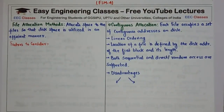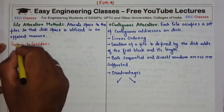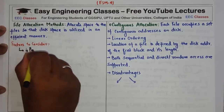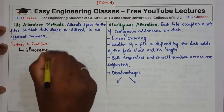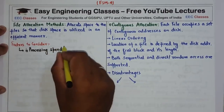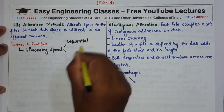Hello everyone. In this video, the topic is file allocation methods, and this is the fourth lecture on file system management of operating systems. File allocation method means allocating space to the file so that the disk space is utilized in an efficient manner. There are certain factors that need to be considered before allocating space to the file. The first factor is the processing speed of sequential access and random access.